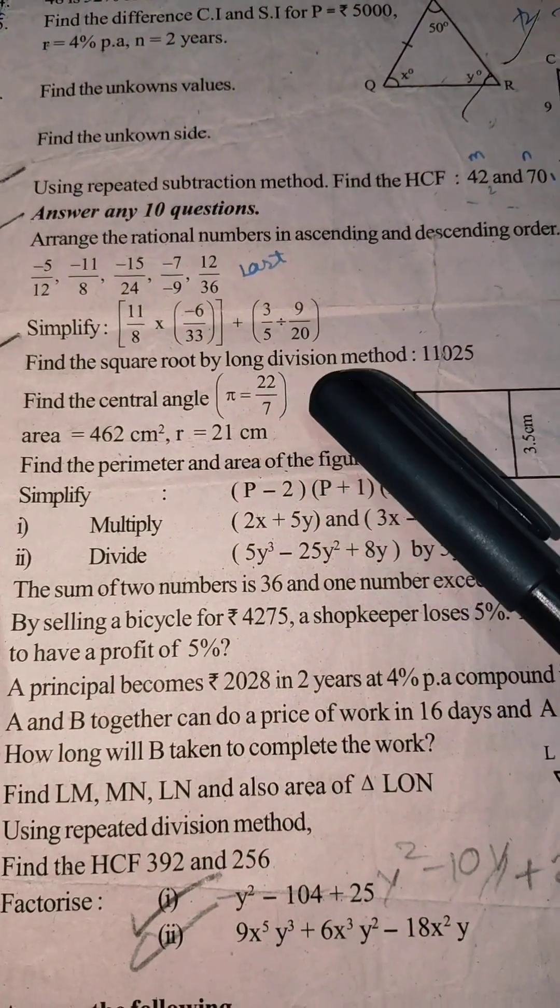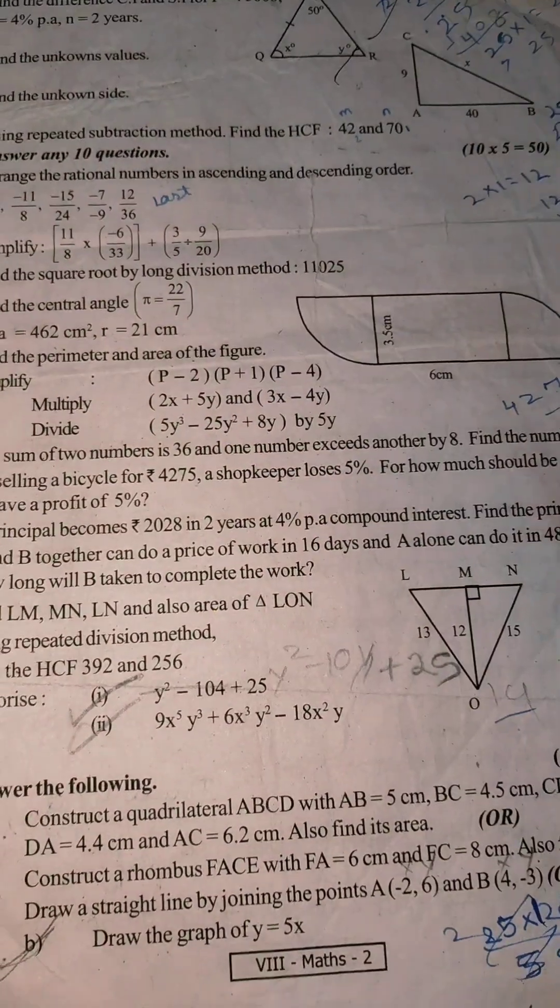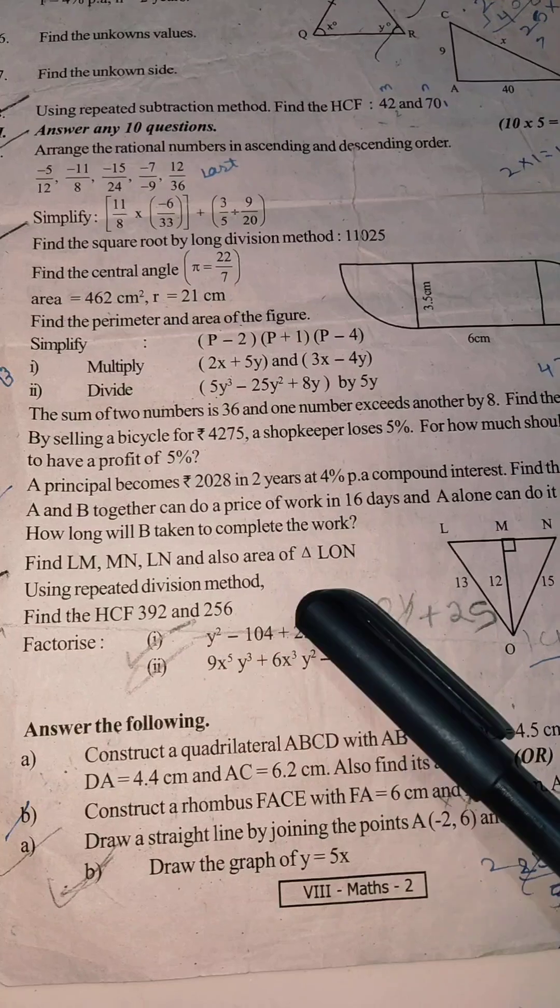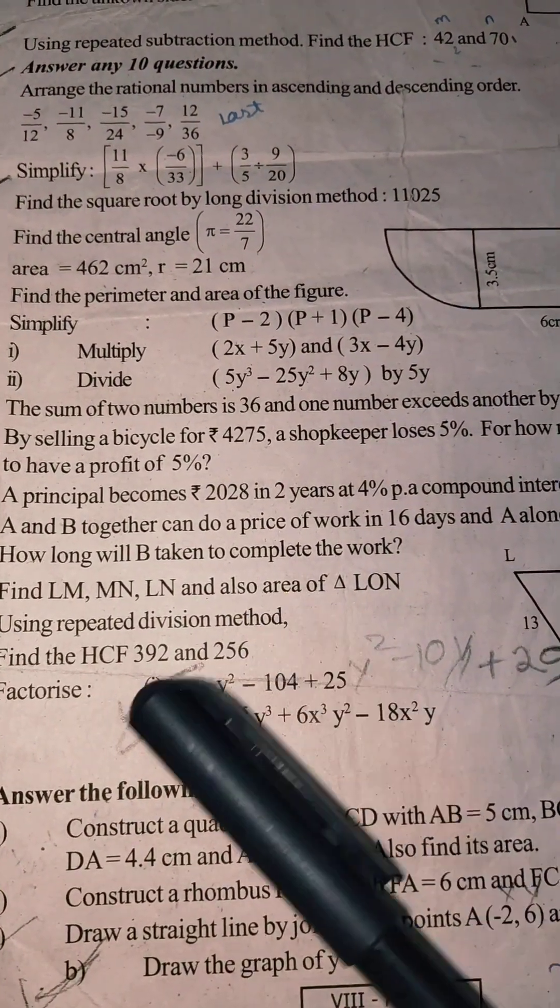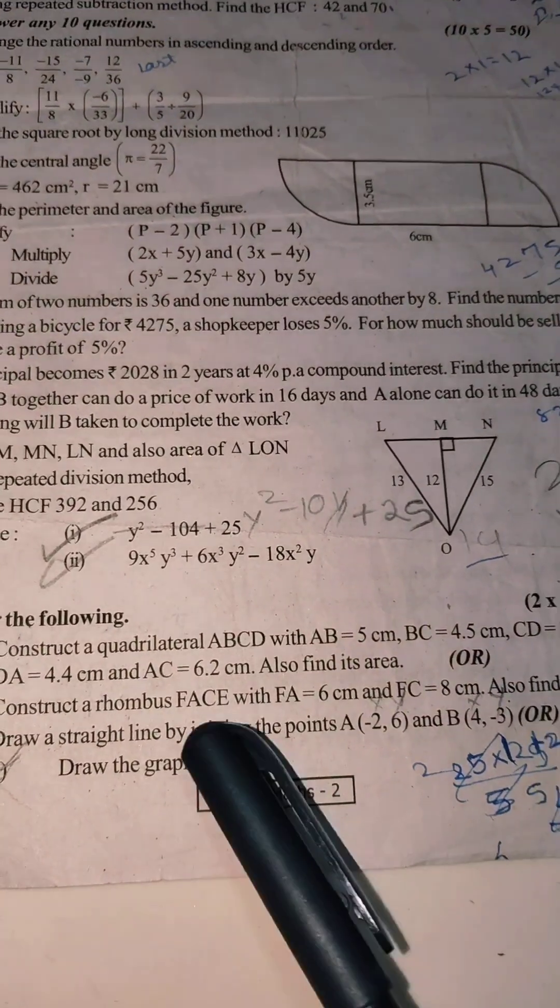Find the central angle. There is an area of r. Then simplify the question. Use a screenshot. Find the HCF. This is also on the channel upload. 392 and 256. Factorize question. Find the quadrilateral question.